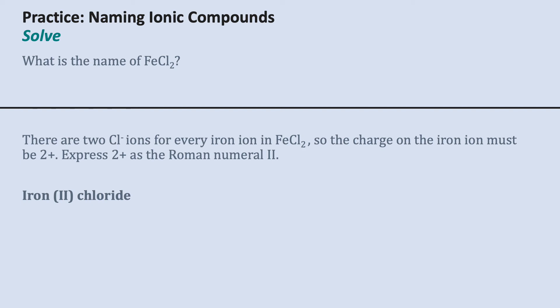We'll express the two plus as the Roman numeral two. So my name is iron with a two in parentheses, followed by the anion, but instead of chlorine, I've got this -ide suffix to indicate that it was a negative ion.